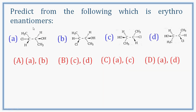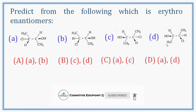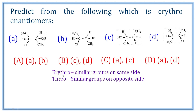Next question: predict which of the following is an erythro enantiomer. Simple definition: erythro means similar groups are on the same side in a Fischer projection; threo means similar groups are on opposite sides. Comparing methyl, methyl, hydrogen, hydrogen, chlorine, and hydroxyl groups — chlorine and hydroxyl on the same side, hydrogen and hydrogen on the same side — that is the erythro isomer.